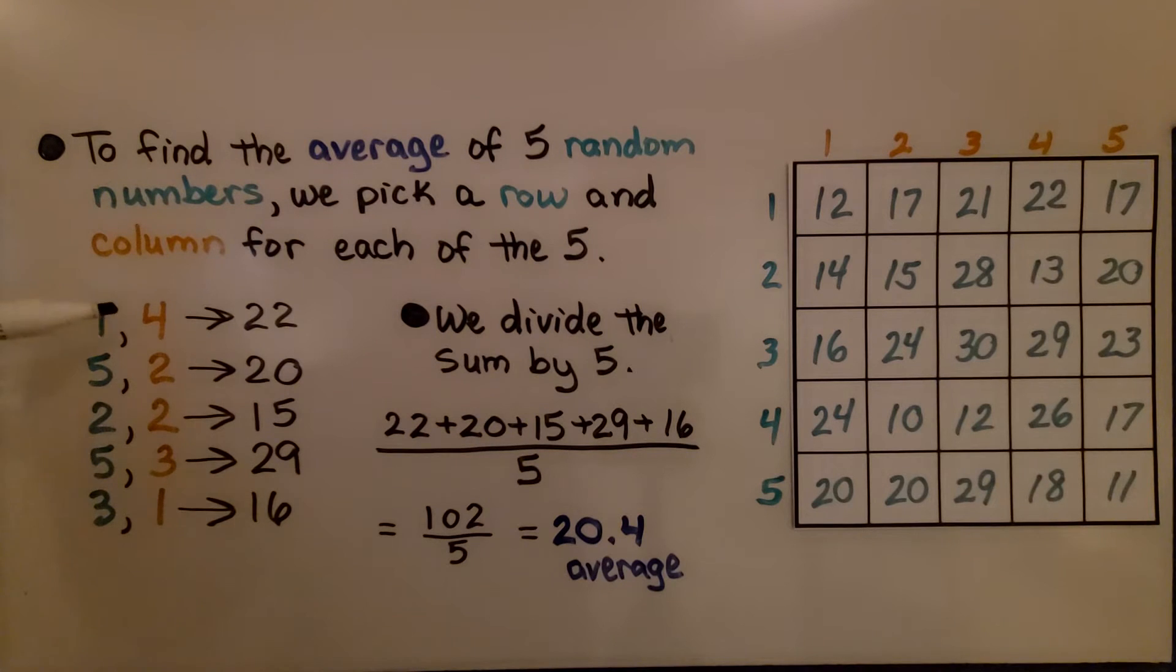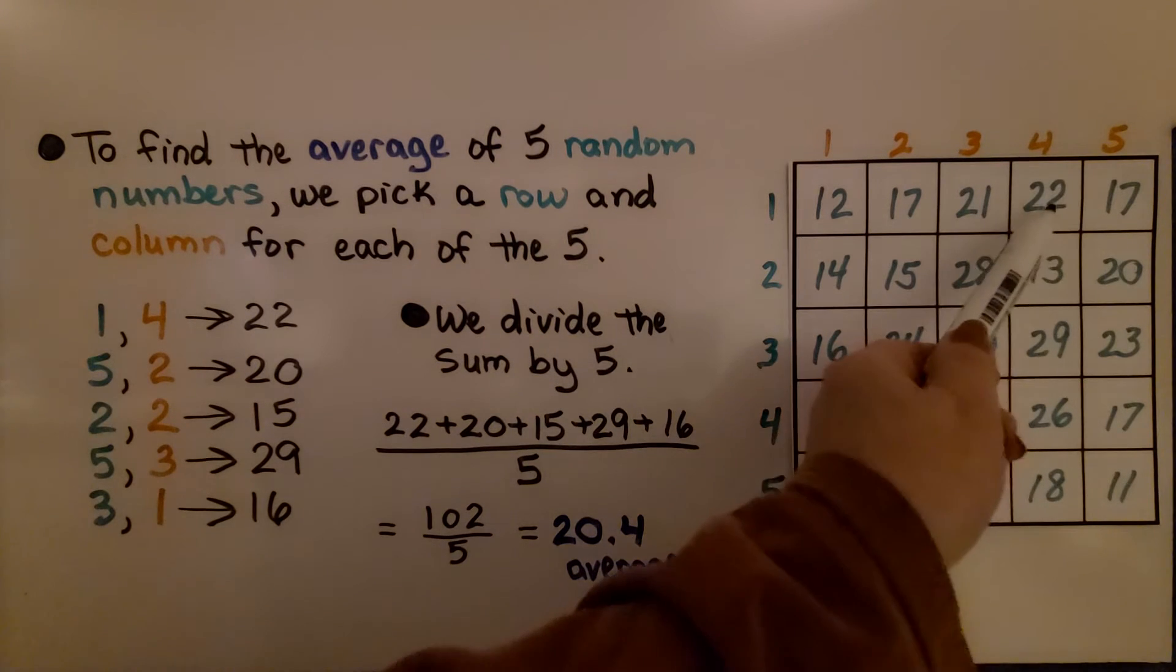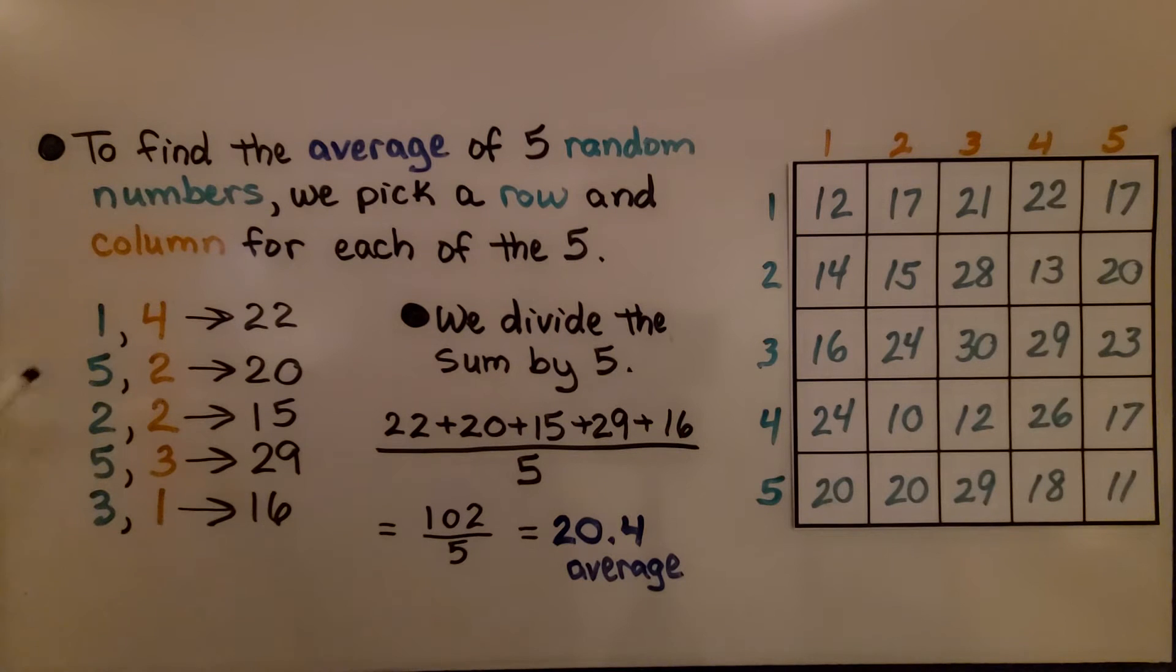If we pick a one and a four, then that tells us our first number is a 22. If we pick a five and then a two, that's going to tell us the second number is a 20. And we keep doing this, and we pick numbers out of our bag or bowl, and we get our five random numbers.